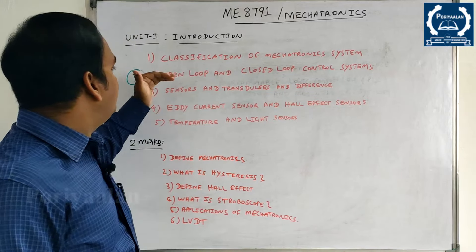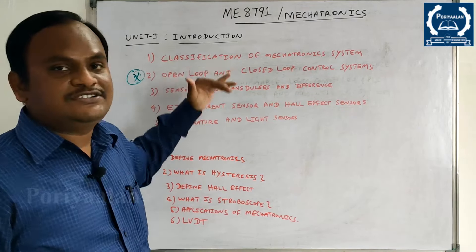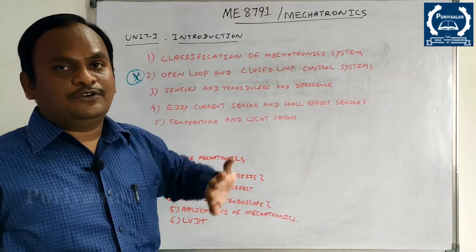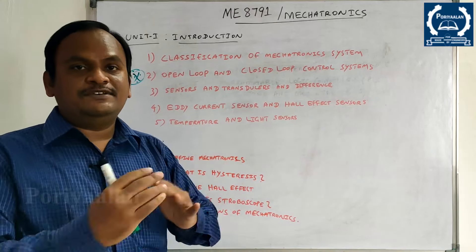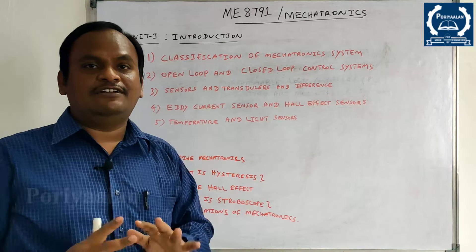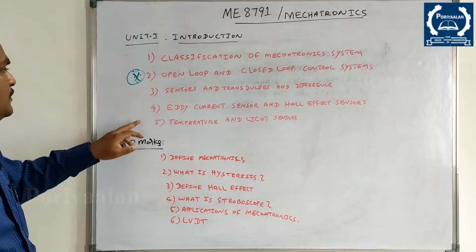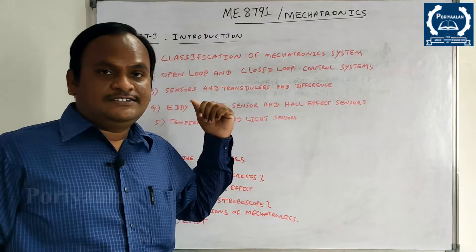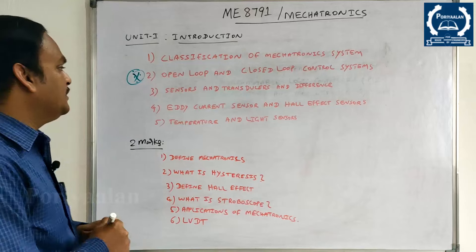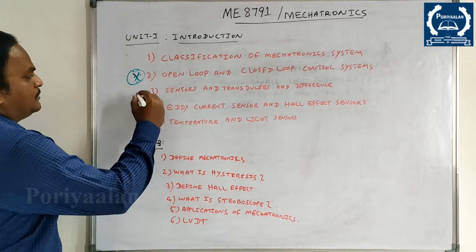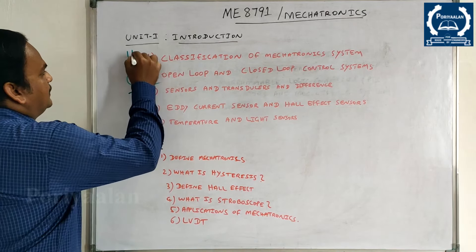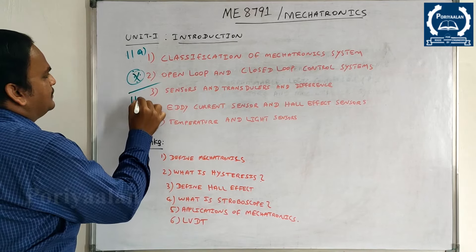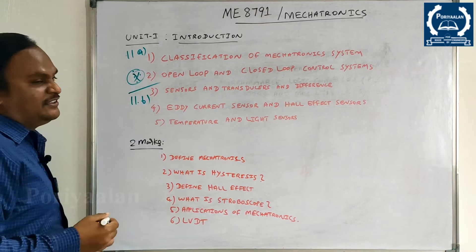There are two divisions — 11 and 2 subdivisions. Open loop and closed loop are one division. You can use either 11A or 11B. The next question is Sensors and Transducers, which is a very important topic. Both 11A and 11B cover another topic.